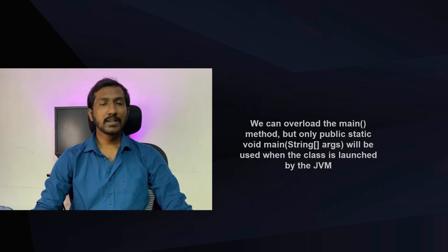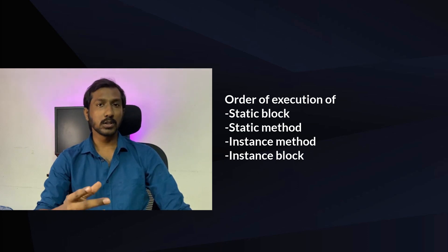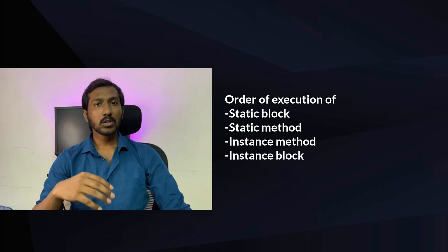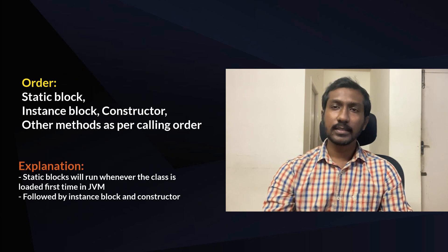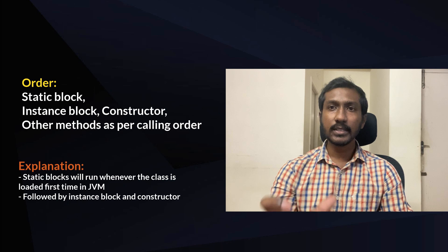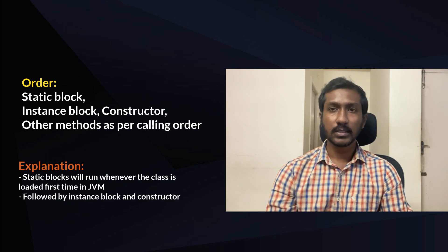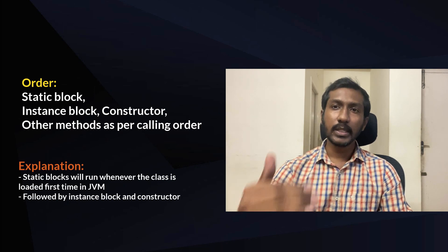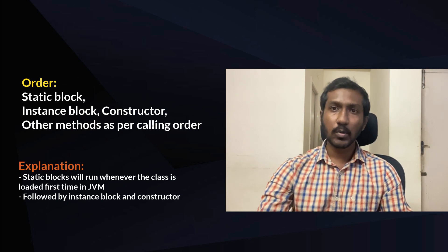Consider a class with a static block, a static method, a normal method, and an instance block — what is the order of execution? When the class is loaded, the static block executes first. When an object is created, the instance block executes next. Then whatever method is called from main executes in that order. The instance block runs before the constructor completes.